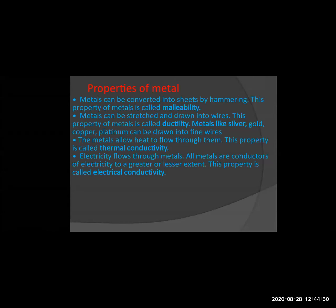Thermal conductivity: if a metal allows heat to flow through it, that is thermal conductivity. For example, a pressure cooker — we cook rice in it. If the metal allows the heat to flow through it, the rice will cook; if not, it won't. This property is called thermal conductivity. The pressure cooker allows heat to flow inside it, and we get cooked rice or dal.